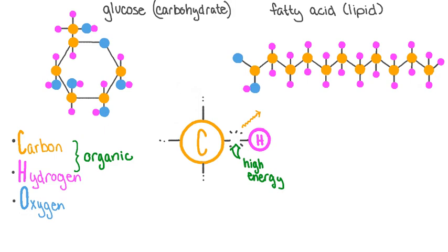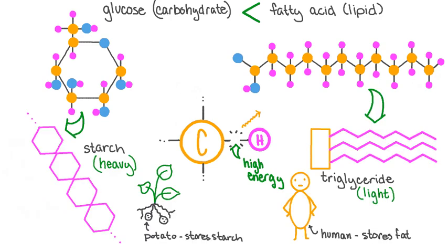Between these two types of energy storage molecules, lipids have a much higher energy to mass ratio since they possess many more of these high energy carbon-hydrogen bonds. This is part of the reason why plants favor easy-to-access starch as their method of long-term energy storage.